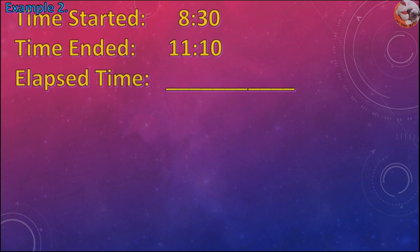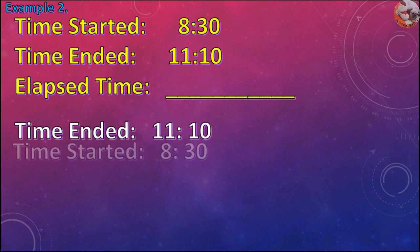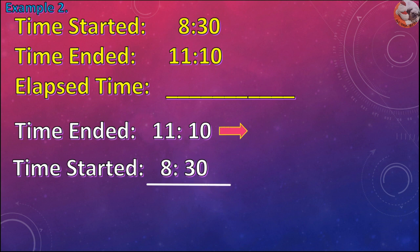Example 2. Time started is 8:30pm and time ended is 11:10pm. Find the elapsed time. Time ended is 11:10pm, time started is 8:30pm. Subtract 8:30pm from 11:10pm.